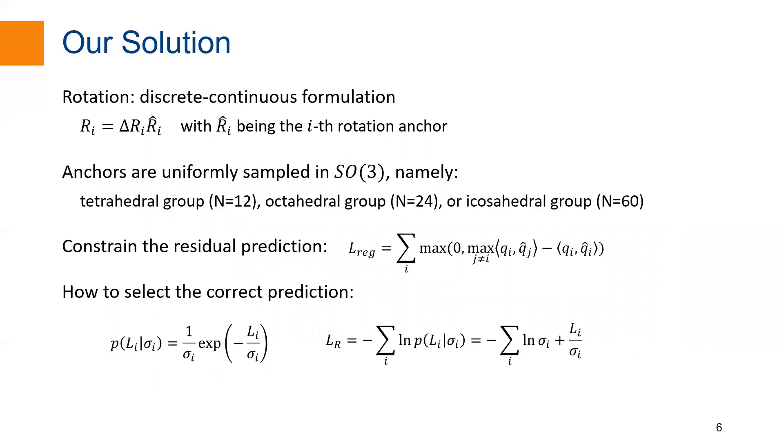To mitigate the local optimum problem of ShapeMatch loss, we take the inspiration that ICP works effectively if a proper initialization is given. We propose a discrete-continuous formulation for rotation estimation. We first uniformly sample rotations in the whole SO(3) space. These sample rotations are referred to as anchors, and used to initialize our prediction.